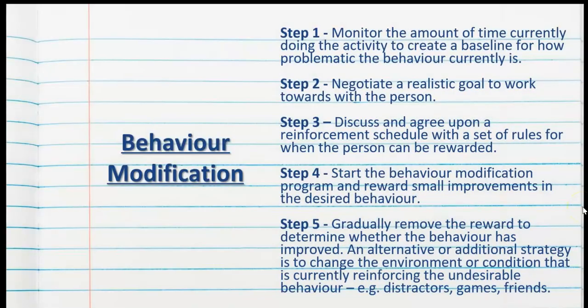Behavior modification involves a series of steps. Step one is to monitor the amount of time currently doing the activity to create a baseline for how problematic the behavior currently is. It's important to note that behavior modification can be applied to the self or it can be applied to another person.